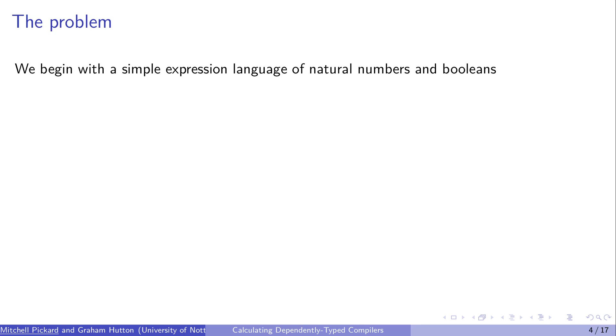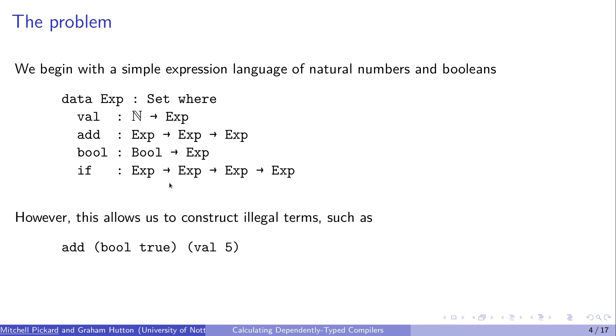So we're going to begin with a simple expression of natural numbers and booleans. It's just a very basic expression type where we have natural numbers and booleans. You can add natural numbers together and do if statements on booleans. The problem with this is that you can construct illegal terms, such as trying to add true and 5. When we want to do calculations on these, it turns out to be easier to encode the typing information in the data type itself.